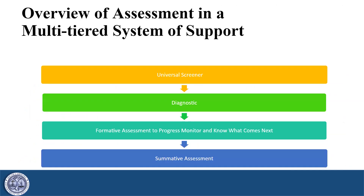Let's take a look at an overview of assessment in a multi-tiered system of support — how do these assessments look in practice, organized in a meaningful process? As a teacher, I'm going to use the universal screener first to cast a wide net to figure out who might be at risk, then start diagnosing those students first, rather than starting at the beginning of my class roster. This allows me to begin teaching at-risk students more quickly. I will use formative assessments to continue progress monitoring and know what comes next for each student. I can also use the universal screeners as a progress monitoring tool. The summative assessment is often used as part of a state accountability system, but may also be used to assess a school's assessment system and measure the impact of Tier 1 instruction.